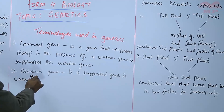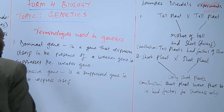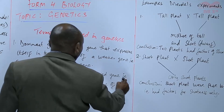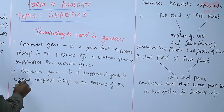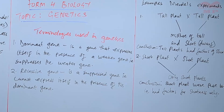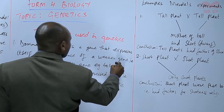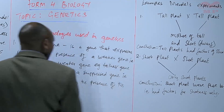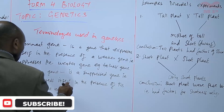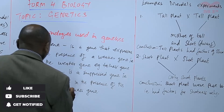Then we have the recessive gene, which is a suppressed gene — it cannot express itself in the presence of the dominant gene. In conclusion, the dominant gene was the gene for tallness, and the recessive gene — the suppressed one — is the gene for shortness. So we have what we call a dominant gene and a recessive gene.